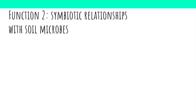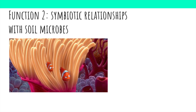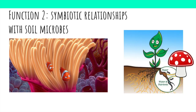Strigolactones also help plants develop symbiotic relationships with microbes that live in the soil. Symbiotic relationships occur in nature when two organisms live and work together. For example, Nemo lives in a sea anemone because clownfish and anemones have a symbiotic relationship — the clownfish gives the anemone food, and the anemone protects the clownfish from predators. Plants and microbes form symbiotic relationships to share resources: the fungus gives the plant vital minerals and water used in photosynthesis, while the plant gives the fungus sugar that can be broken down into energy.